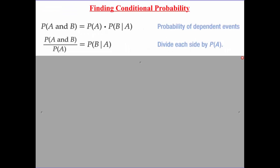Now finding conditional probabilities. Finding P of B given A, it's just a mathematical equation. You divide both sides by the probability of A. So the probability of A and B happening divided by the probability of A gives me B given A.